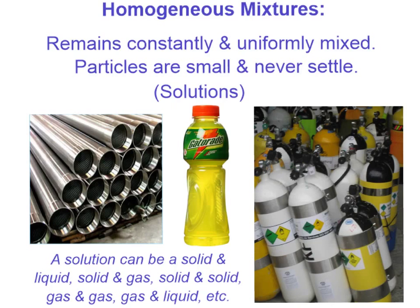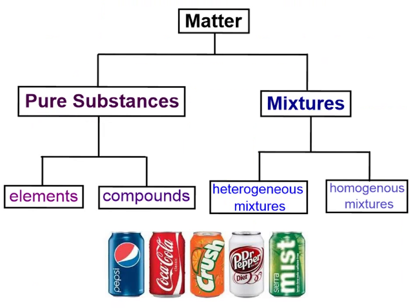Here's an overall diagram to help us understand what matter is. It can be divided into pure substances — either elements or compounds — or mixtures, which include heterogeneous mixtures and homogeneous mixtures.